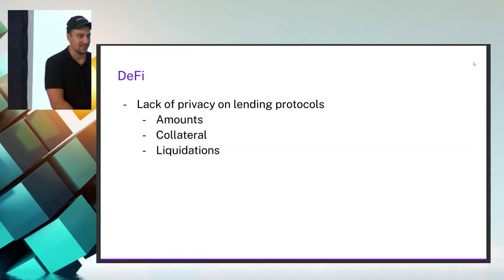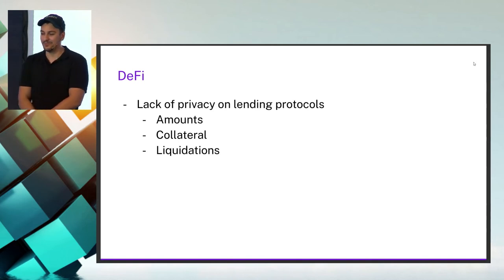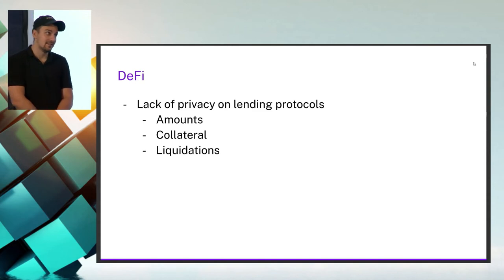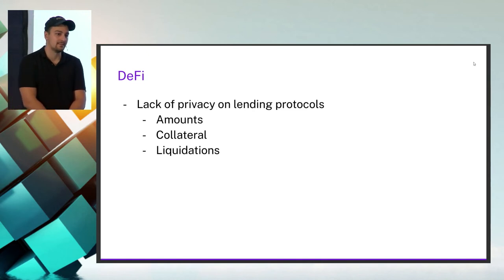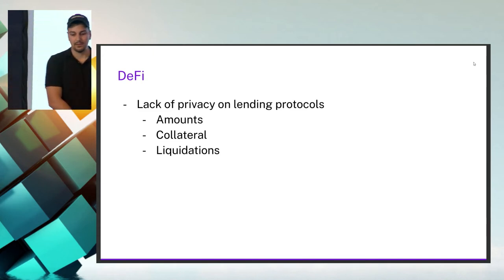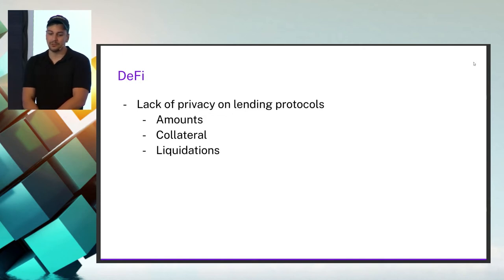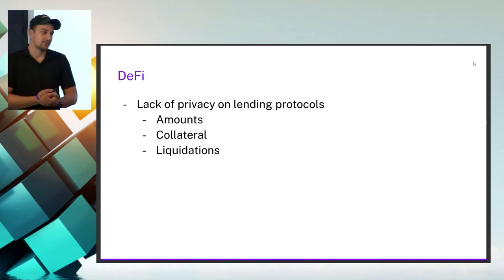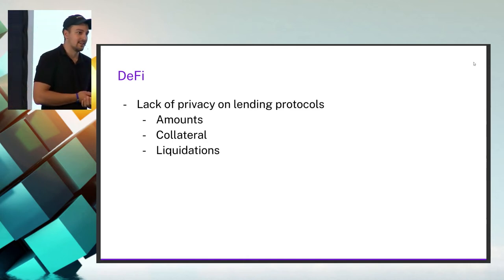DeFi also has lending protocols that allow you to take collateralized loans and get borrowed assets to use in the DeFi space. Implemented without privacy in mind, this allows anybody to see how much tokens you've borrowed, what your collateral is, and whether you're able to be liquidated — and this is visible for all users of the protocol.